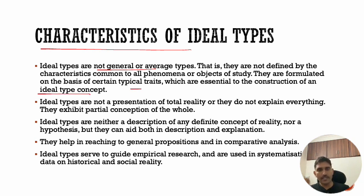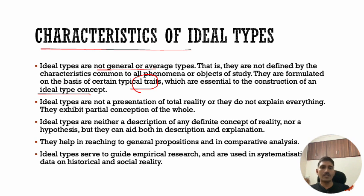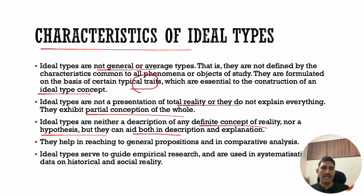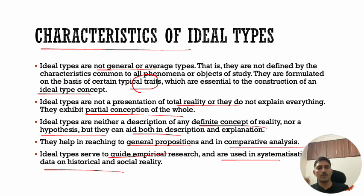We will look at only those traits that are relevant to the concept we are studying. For example, religion is multidimensional and has 50 different traits, but we will only look at those traits which are useful in the development of capitalism. Next, ideal types are not a representation of total reality and they do not explain everything — they exhibit only a partial conception of the whole. They are neither description of any definite reality nor a hypothesis, but they can aid in both description and explanation.